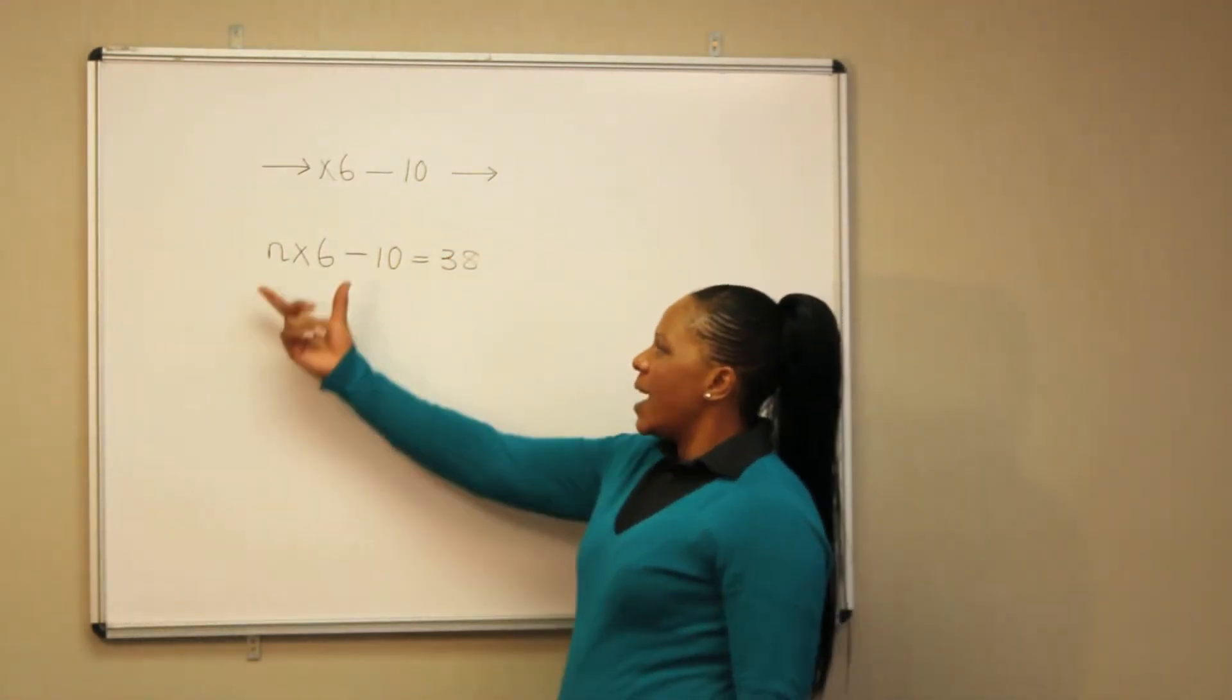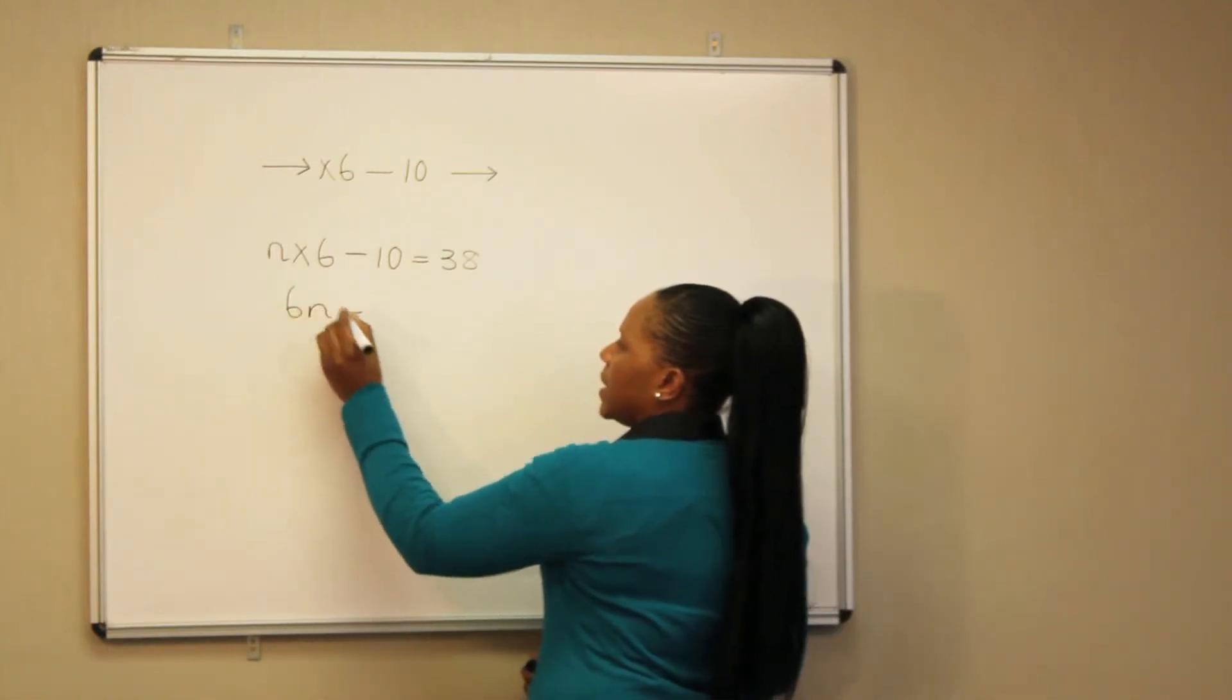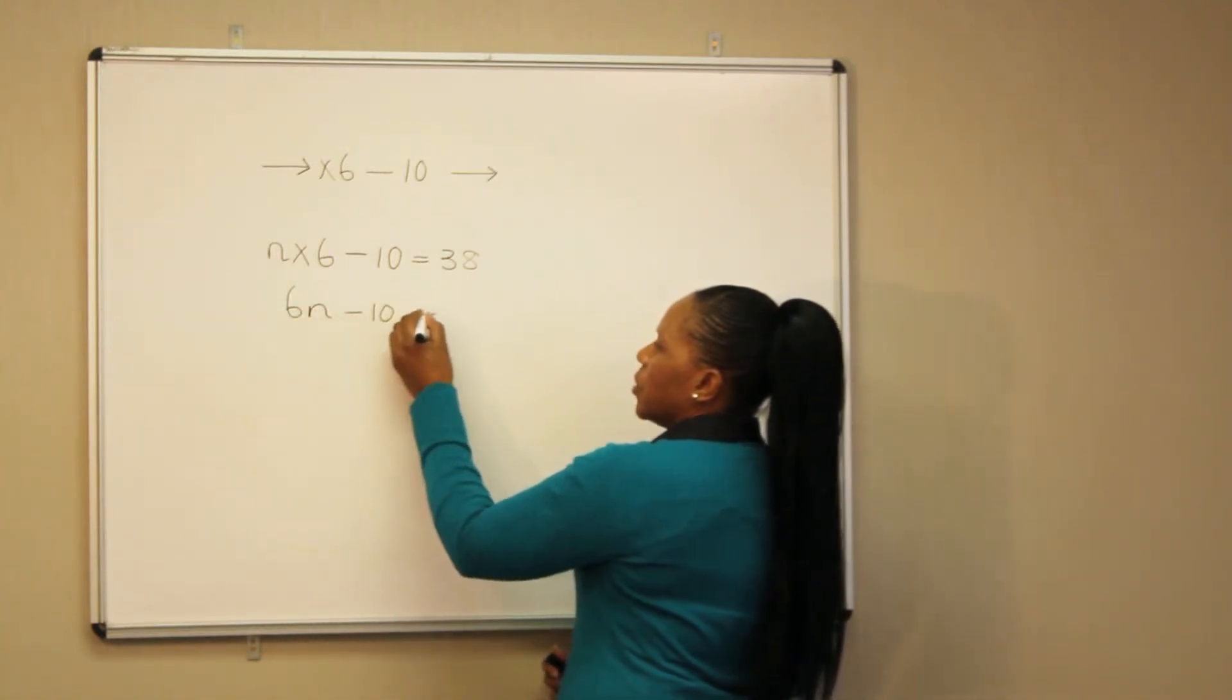So, we are going to multiply n by 6. We get 6n minus 10, which is equal to 38.